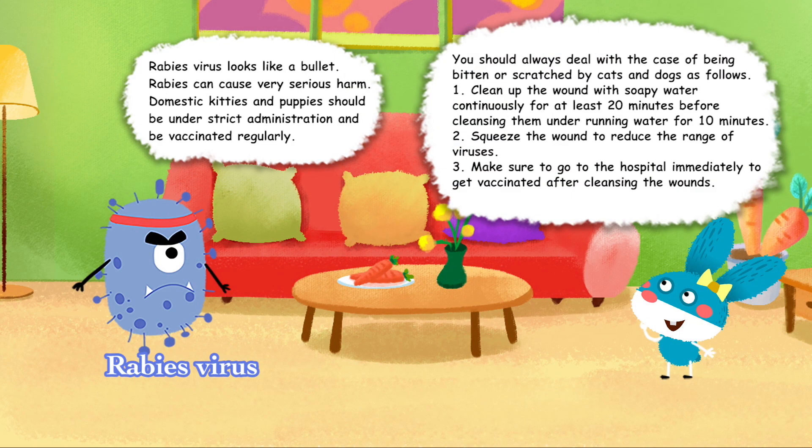Rabies Virus looks like a bullet and can cause very serious harm. Domestic cats and dogs should be under strict administration and vaccinated regularly. If bitten or scratched by cats or dogs: First, clean the wound with soapy water continuously for at least 20 minutes, then under running water for 10 minutes. Second, squeeze the wound to reduce the spread of viruses. Third, go to the hospital immediately to get vaccinated.